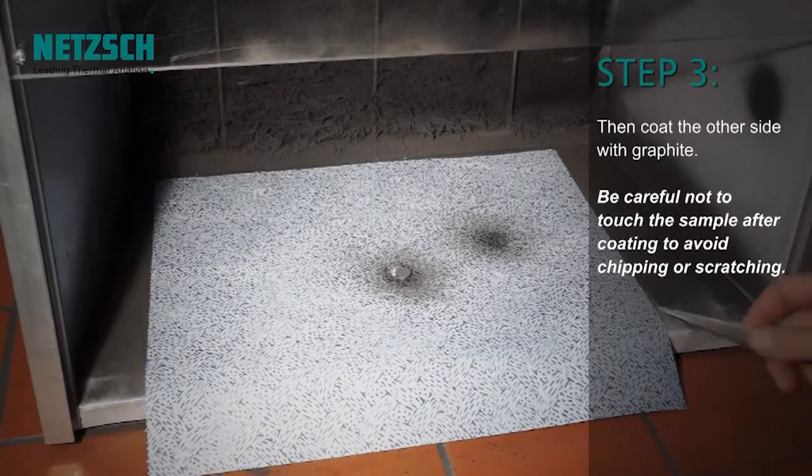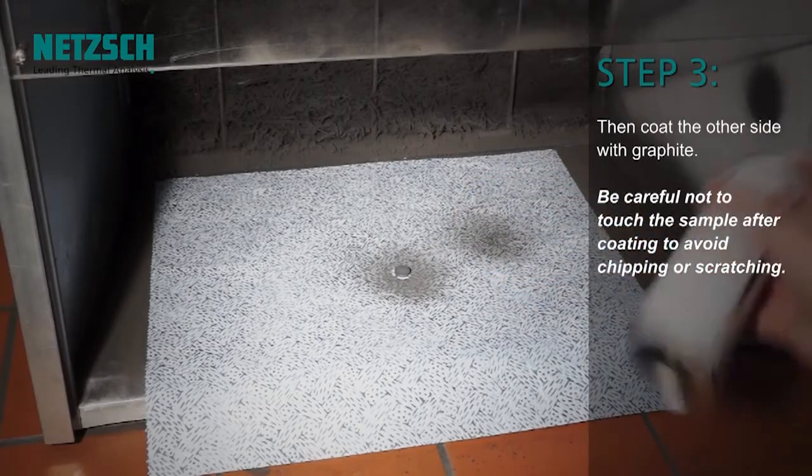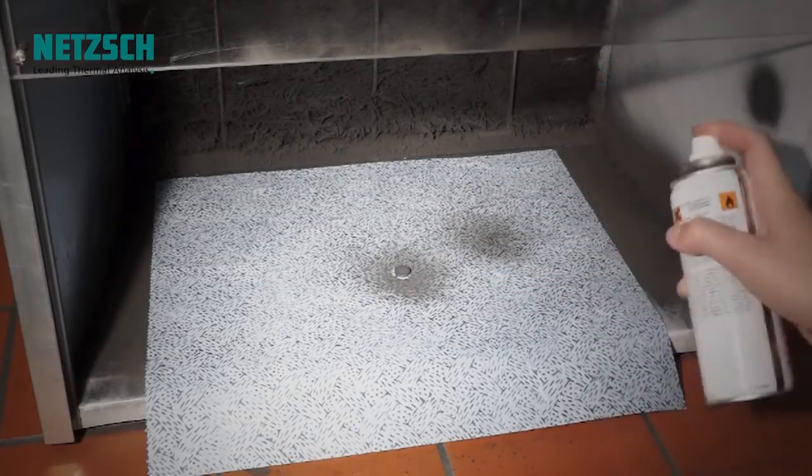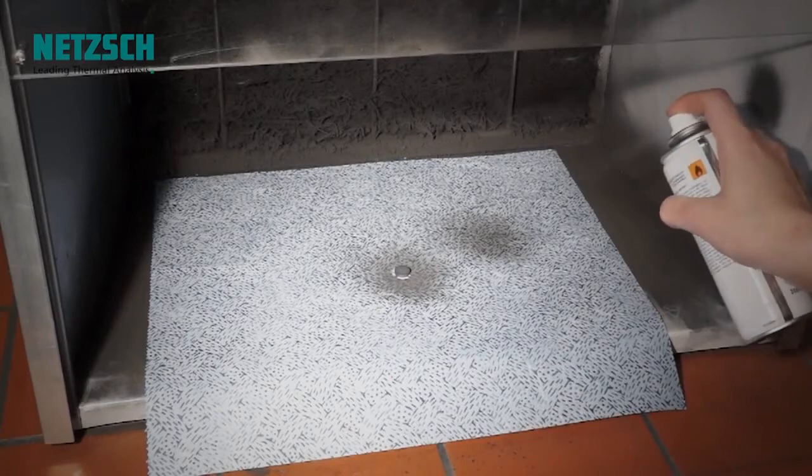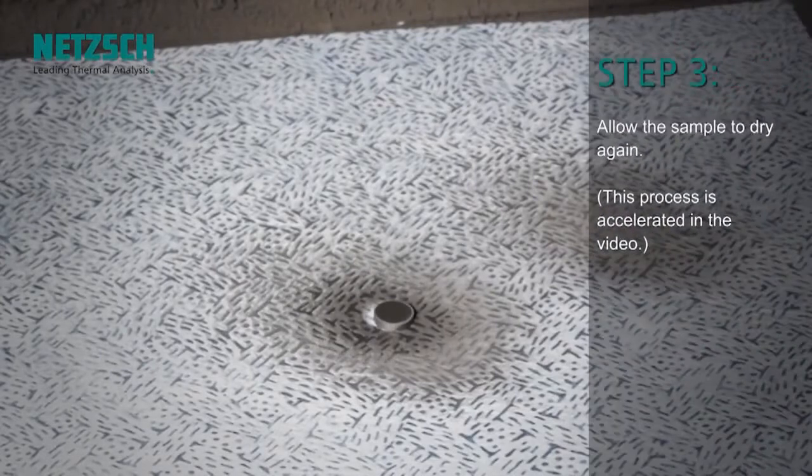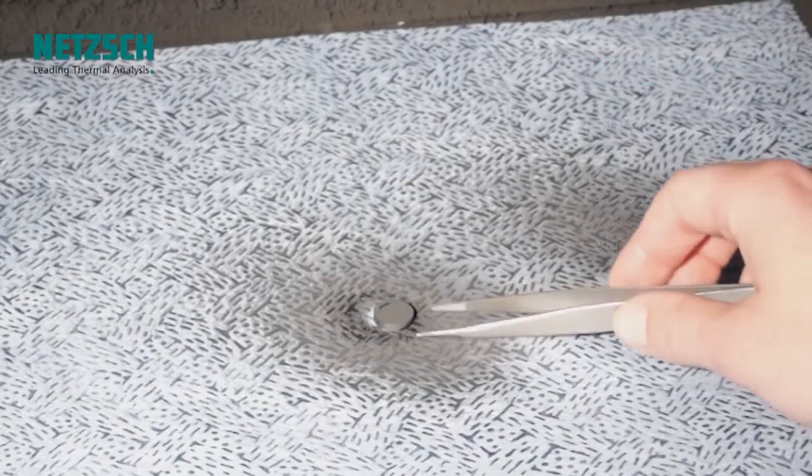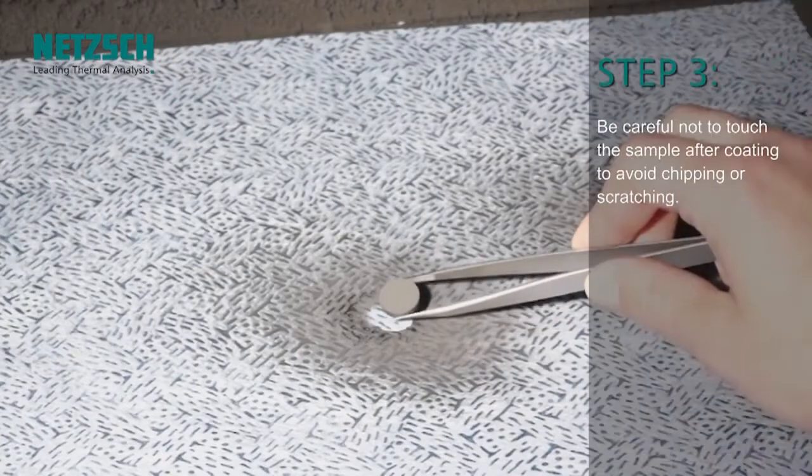Then coat the other side with graphite. Allow the sample to dry again. Be careful not to touch the sample after coating to avoid chipping or scratching.